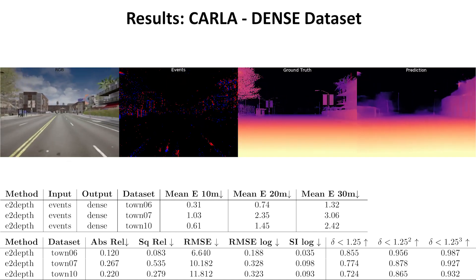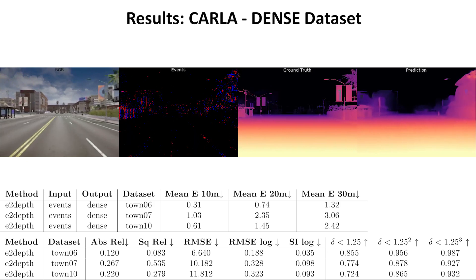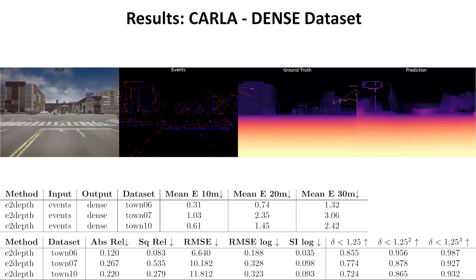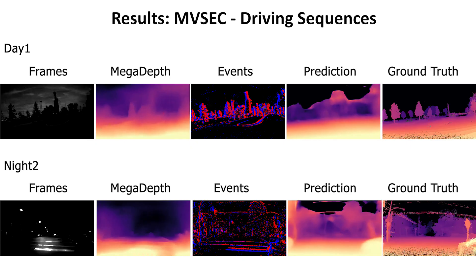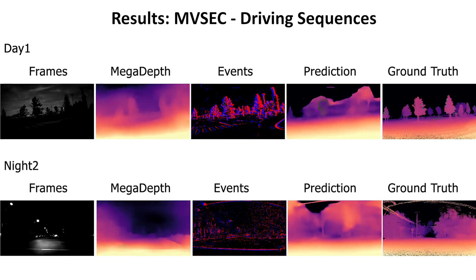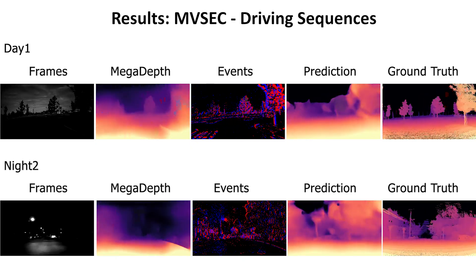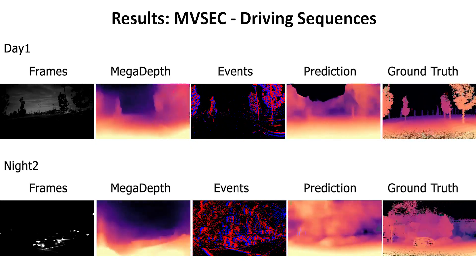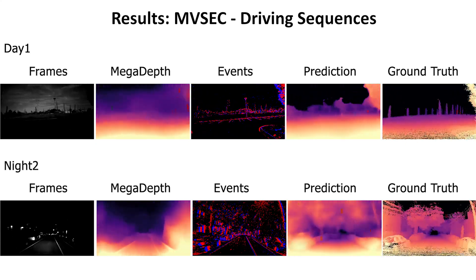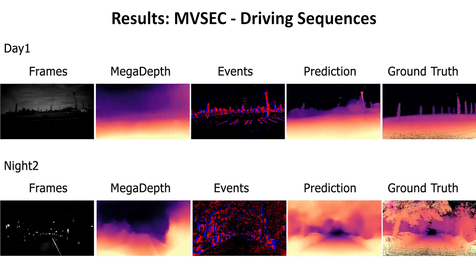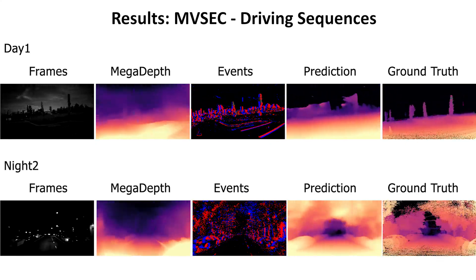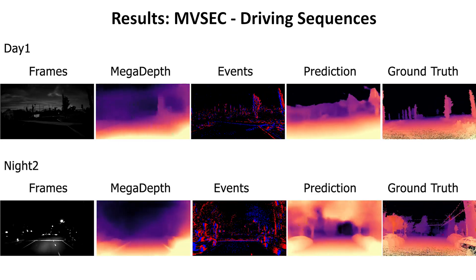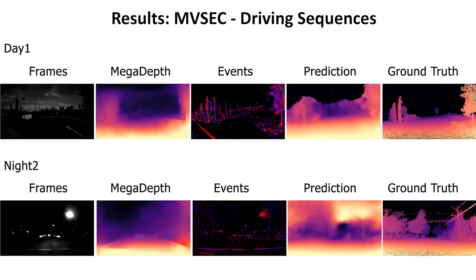Our event-based network predicts depth with state-of-the-art accuracy. We fine-tune our network on real data using the NVSEC dataset. We evaluate it in driving scenarios at different vehicle velocities and illumination conditions, ranging from day to night. Our results significantly improve previous event-based methods.